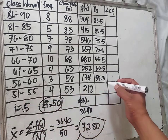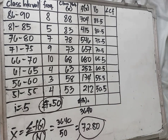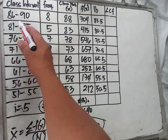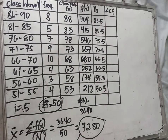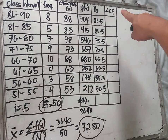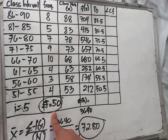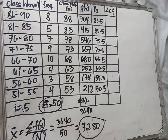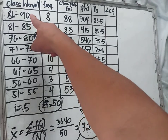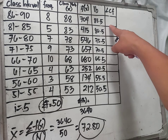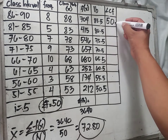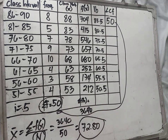Next, to find the cumulative frequency, we base it on the highest class interval. The highest class interval is 86 to 90. We place the total frequency at the highest class interval, which is 50.